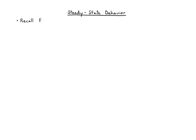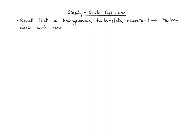This video is about state classification, which we need to talk about the steady state behavior of a Markov chain. We've been talking about homogeneous, finite-state, discrete-time Markov chains. What that means is that time is discrete, the transition probabilities from time to time are the same — that's homogeneous — and there's a finite number of states, named 1 through K for convenience.